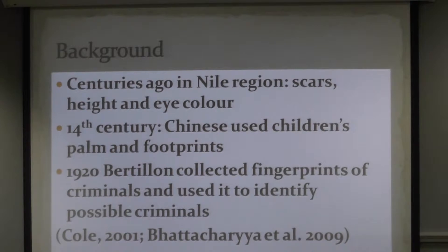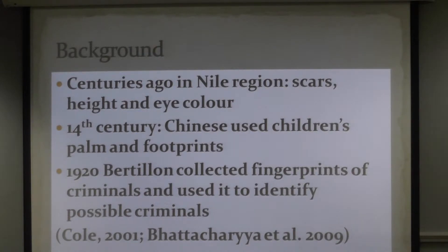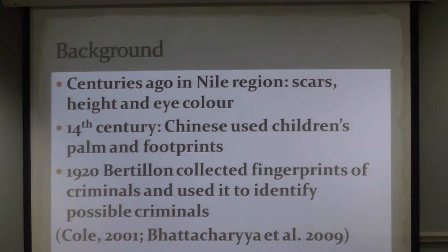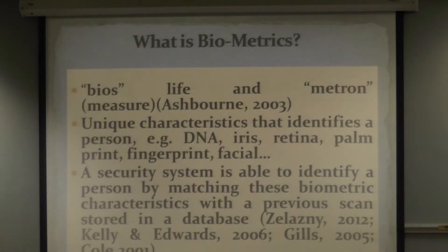Now, identifying people is nothing new. Way back, even in the Nile region, people used to identify members of the community by their height, eye color, and scars on their faces. Even in the 14th century, it was recorded that the Chinese people used to identify their children with their foot and palm prints. And then in 1920, Bertelin was the guy that started with fingerprints for criminals — he predicted that possible criminals could have matching fingerprints. From there, it developed into the technology we have today.